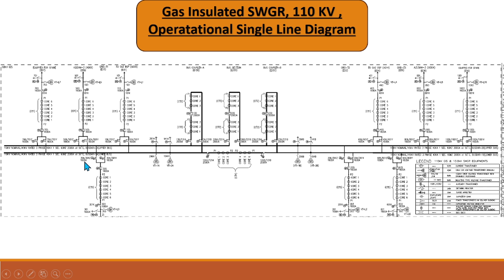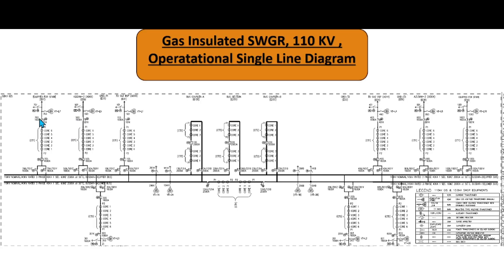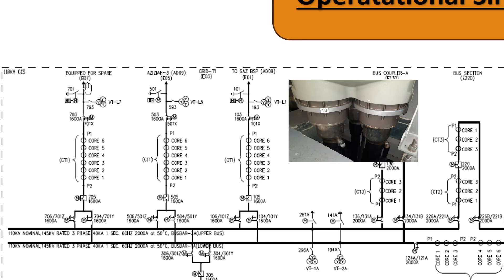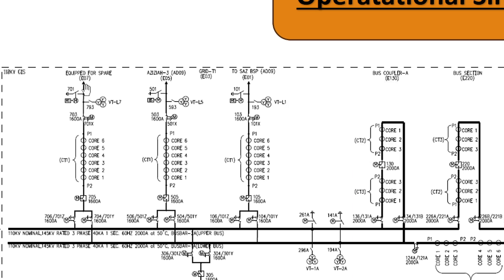Let us focus on one bay to understand its components — all other bays will be more or less the same. Our journey of power in the substation starts here by cables. Normally in GIS we use XLPE cables of size 630 mm² to 2000 mm² — these are high voltage underground cables. They feed power at this point. In some substations there are surge arrestors on the GIS; the first point of entry of power is at the surge arrestor.